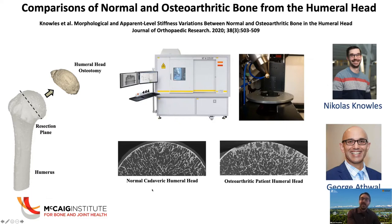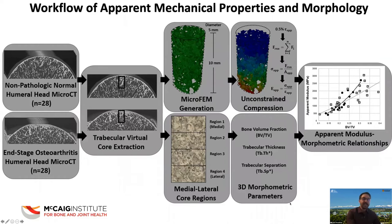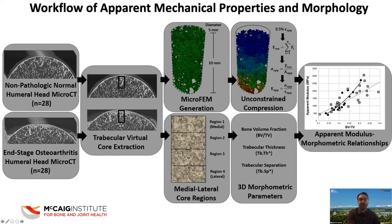In the last year of my PhD, I started attending the surgeries of our clinical supervisor Dr. Athwal, an upper extremity surgeon who performs multiple total shoulder arthroplasty surgeries a year. I began collecting the osteoarthritic patient humeral heads from patients undergoing total shoulder arthroplasty — normally this bone would be discarded as medical waste, but we were able to take it to the lab and test it. We used cadaveric non-pathologic humeral heads as controls. In the first study, all I did was scan them in the micro CT scanner at 20 micrometers to get these high-resolution images, ending up with 28 end-stage OA humeral heads.